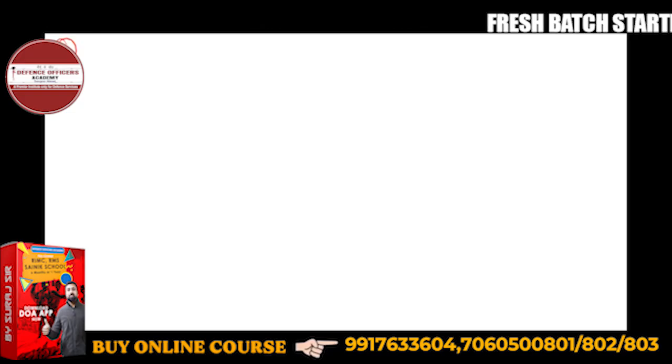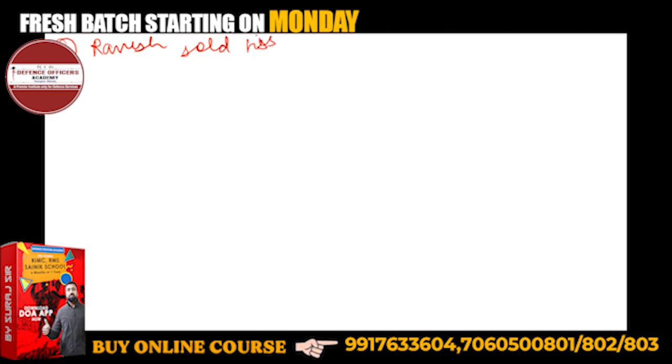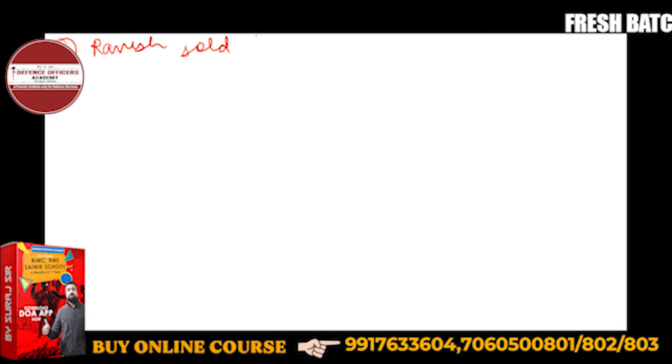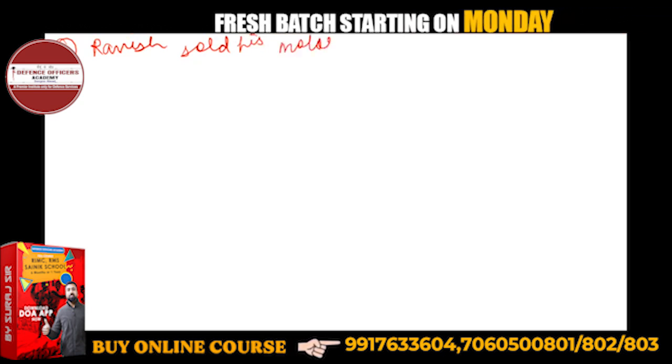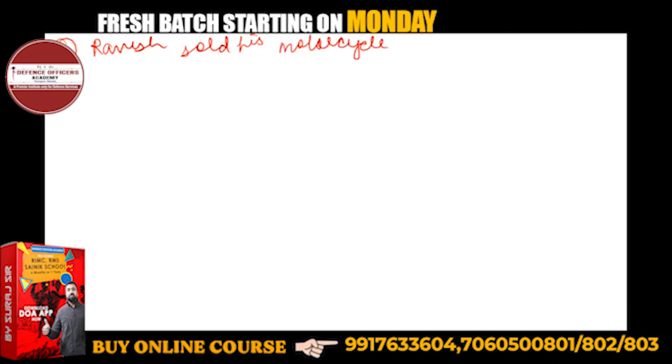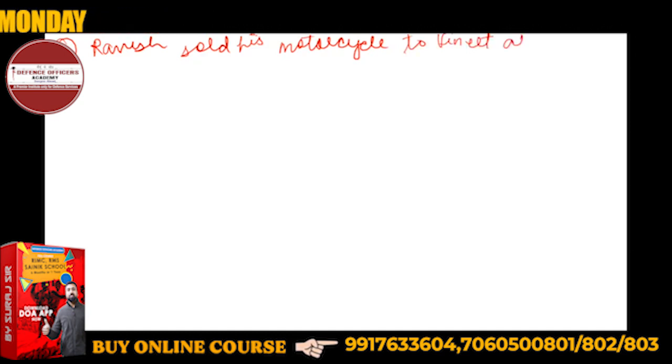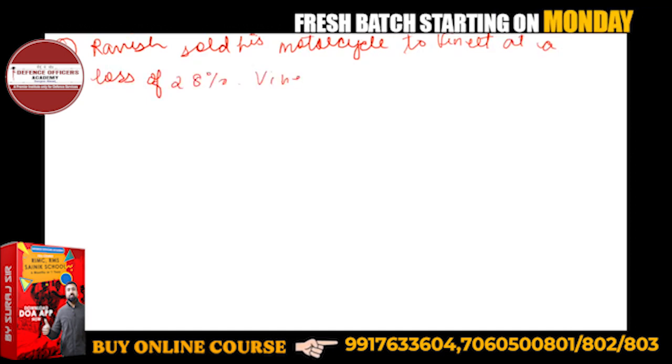Question number eight says that Ravish sold his motorcycle to Vineet at a loss of 28%. Then Vineet spent rupees 1680 on its repairs.